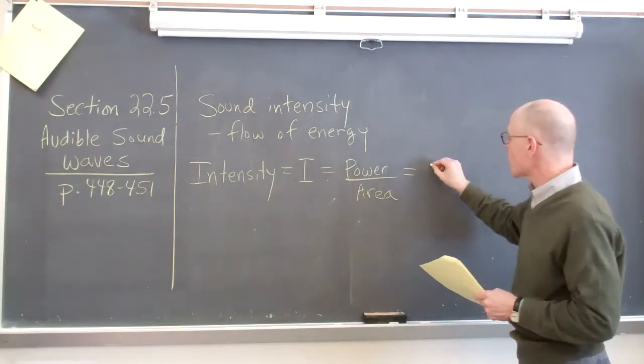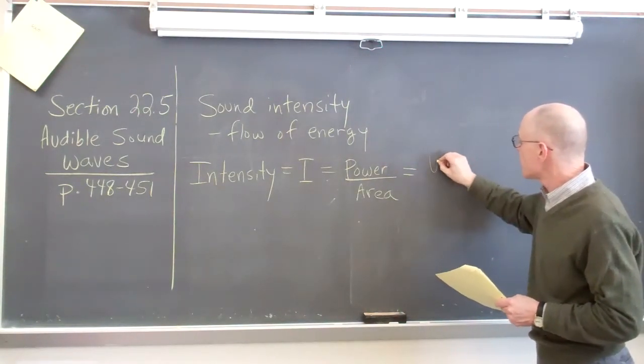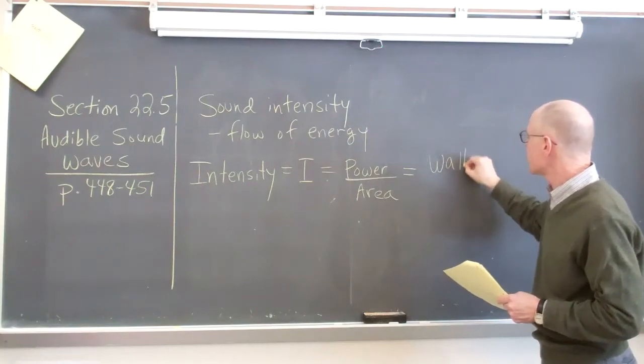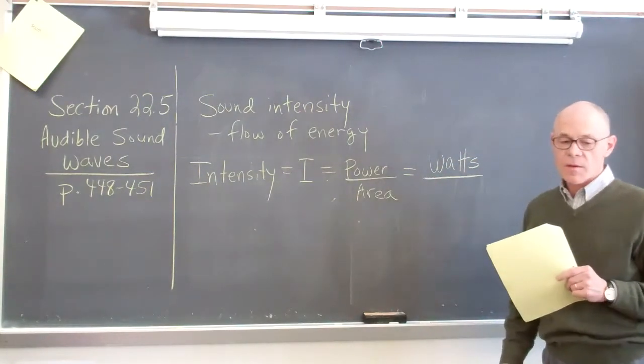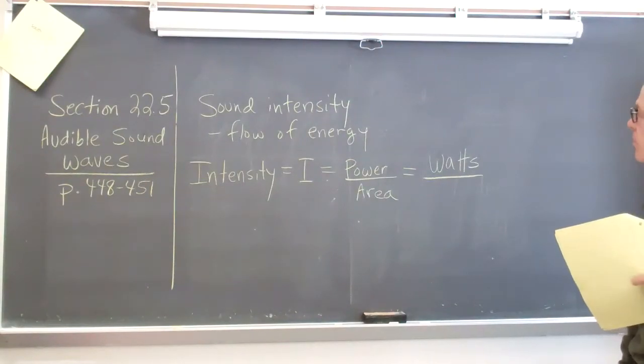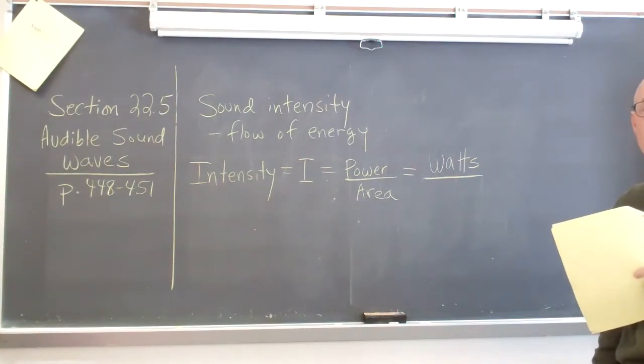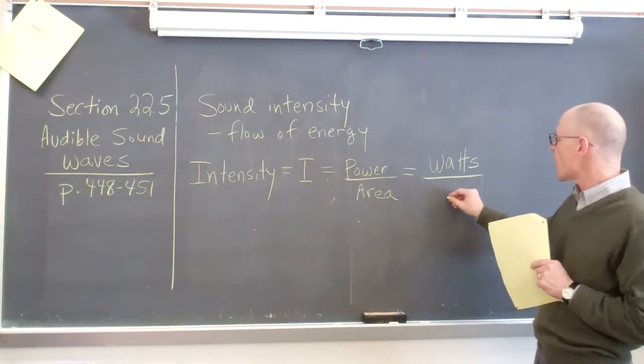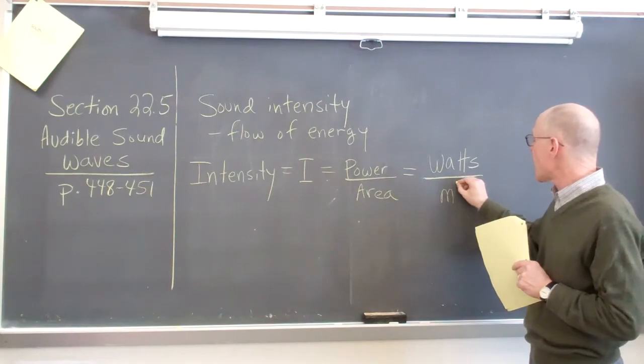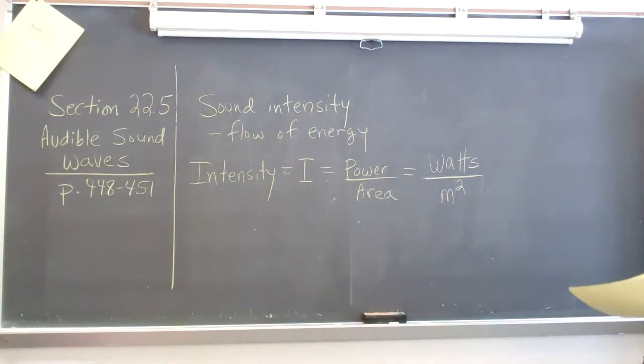In terms of units, units for power is watts. That would be the metric units for power. It's the same units we use for light bulbs. If you see a light bulb and it's rated as 60 watts, it's the same units as we're using here. And then the area, again in metric, would be square meters. We'll be using just strictly metric units for sound intensity.